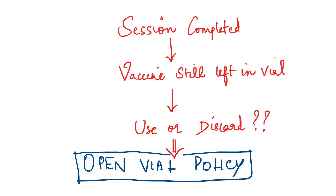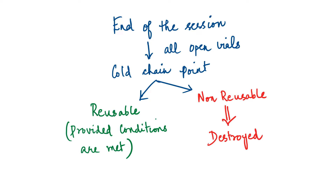To understand open vial policy, imagine that you have just completed an immunization session and you find that vaccines are still left in open multidose vials. The question is whether to use them in subsequent sessions or to discard them — and this is answered by open vial policy. At the end of every immunization session, all open vials should be returned to the cold chain point, where they are segregated into reusable and non-reusable vials. Reusable vials can be used in subsequent sessions for up to 28 days, provided certain conditions are met.